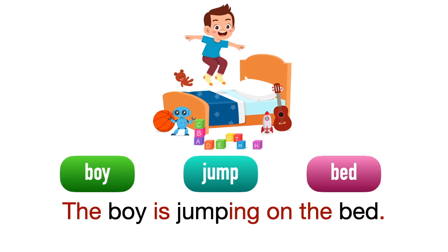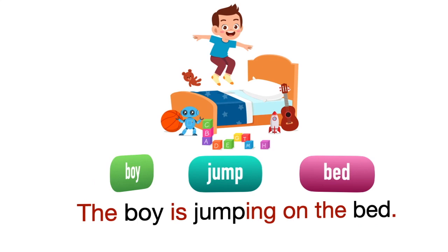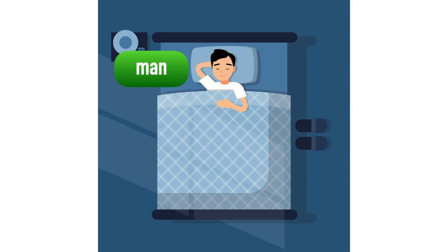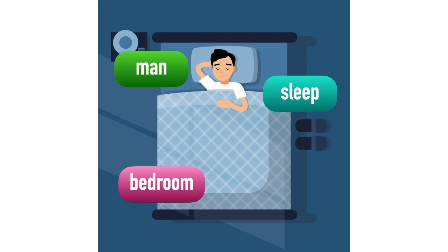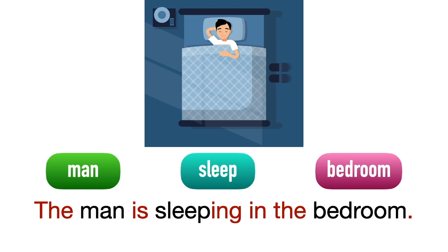It's a man, and the action is sleep. The place is bedroom. The man is sleeping in the bedroom. Di situ nampak bagaimana tidak perlu objek — lelaki itu tidur dengan sendirinya.